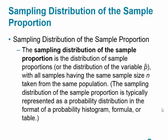The sampling distribution of the sample proportion is simply the distribution of the sample proportions, or the distribution of the variable p-hat. All samples must have the same size and must be taken from the same population.